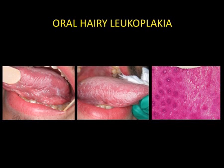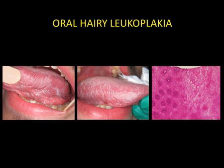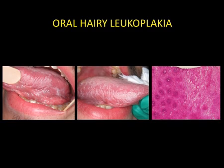Oral hairy leukoplakia is an infectious manifestation caused by the Epstein-Barr virus. Cells appear edematous and clear on histological examination. Clinically, there is a white coloration, generally on the border of the tongue, and it is bilateral. Oral hairy leukoplakia is observed principally during HIV infection, but long-term local anti-inflammatory treatments may also be responsible for this type of lesion.